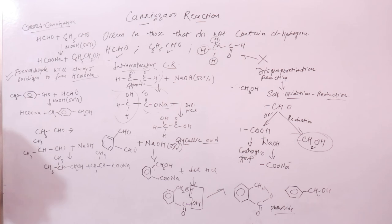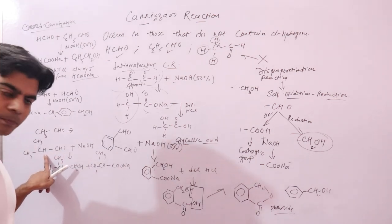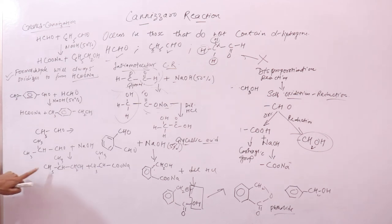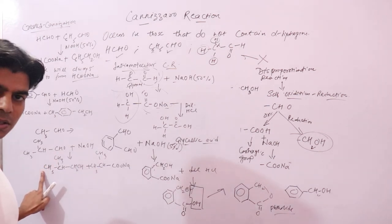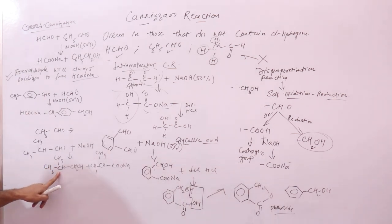This exceptional behavior occurs because the compound contains alpha hydrogens yet still shows Cannizzaro reaction. The reason is possibly due to the +I (electron-releasing) effect of the two alkyl groups. These alkyl groups release electrons toward the carbonyl carbon, making the carbanion formed in the aldol mechanism unstable.